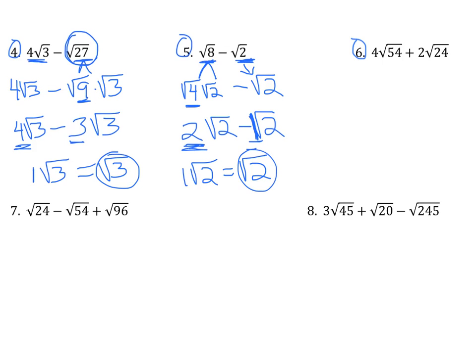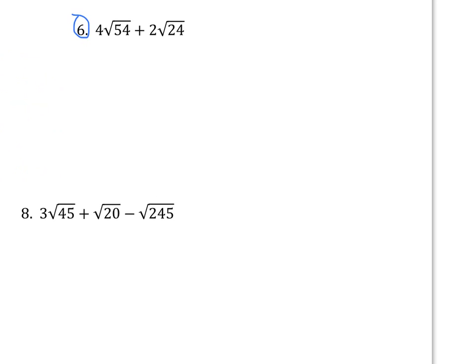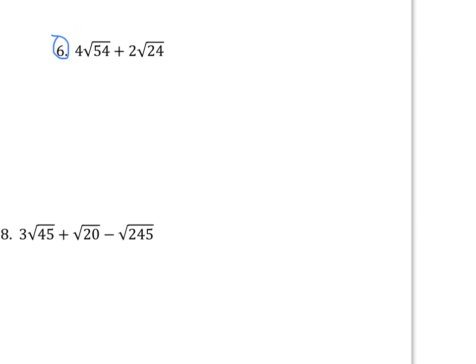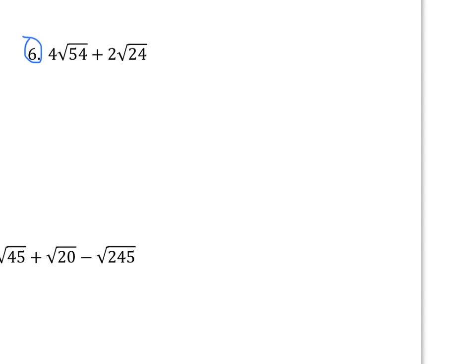Okay, let's do one more — let's do number six. This one is actually going to take a little bit more work; we're going to zoom in a little bit more so we have more space. Square root of 54 and the square root of 24 — both of them have perfect squares that go into them, so I can simplify both. Let's just take our time simplifying both. Eventually, we're going to get the same number in the square root, so we can add or subtract the radicals.